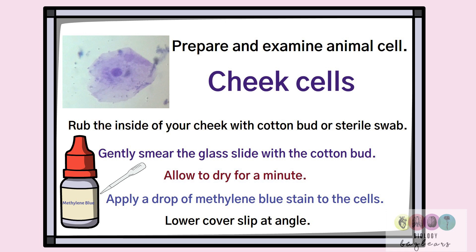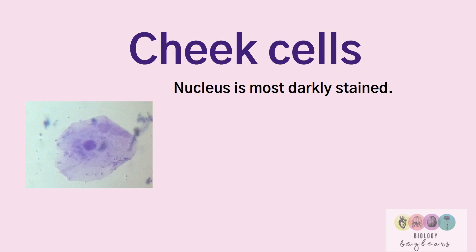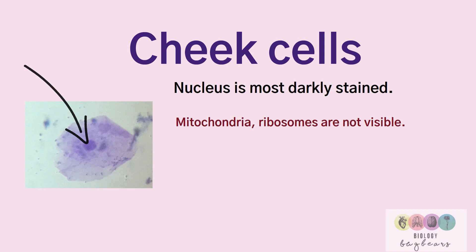When you view your cheek cells using the compound light microscope, the nucleus is the most darkly stained part — you can see it in the diagram here. You cannot see mitochondria and ribosomes, as they are not visible because the magnification is not strong enough with this type of microscope.